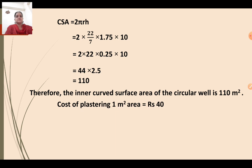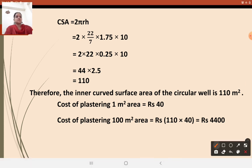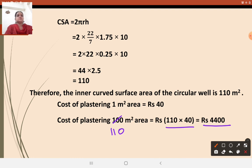Now for the cost of plastering: the cost of plastering 1 meter square equals Rs. 40. Therefore the cost of plastering 110 meter square equals 110 into 40, which equals Rs. 4400. We have covered 3 sums today and will continue with exercise 13.2 in the next period. Thank you and practice this.